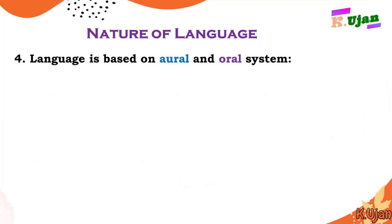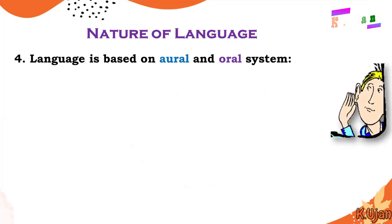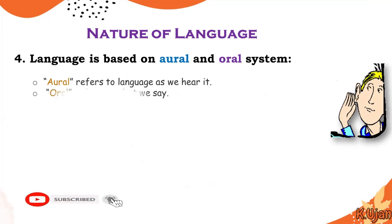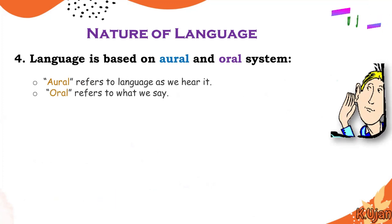Number four: language is based on an oral and aural system. Aural — A-U-R-A-L — refers to language as we hear it, and oral refers to what we say. So whatever we hear or whatever we say, that is actually the nature of language.